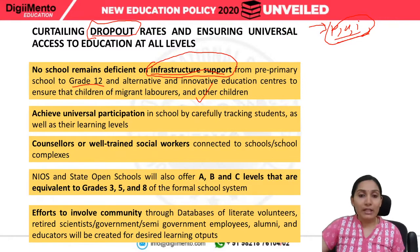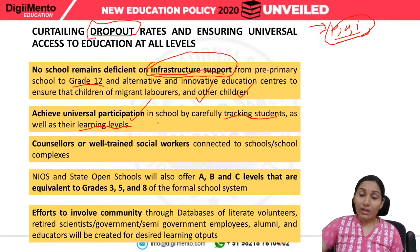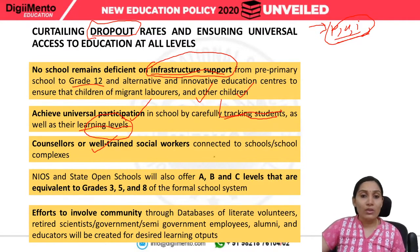Second is achieving universal participation, meaning participation of all. This can be done by carefully tracking students as well as their learning levels. Counselors or well-trained social workers will be connected to the schools to give counseling and mental support to students.